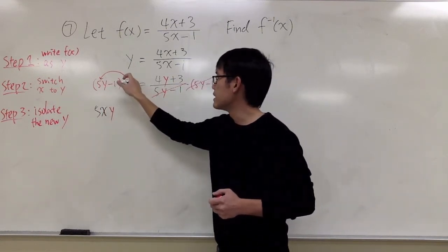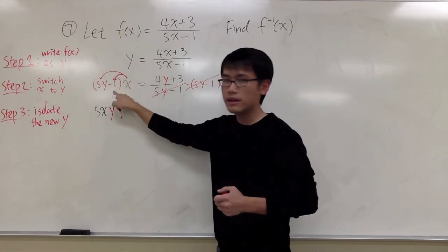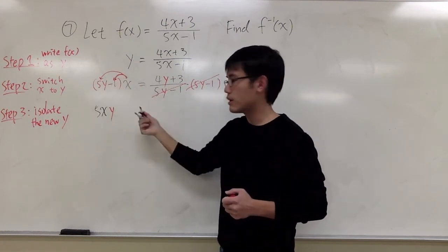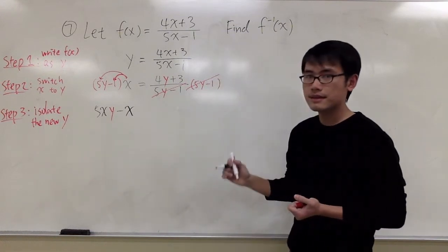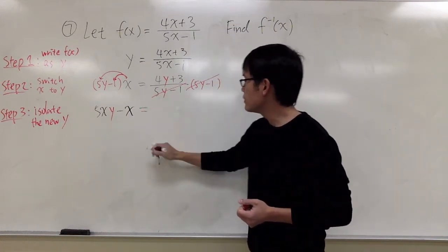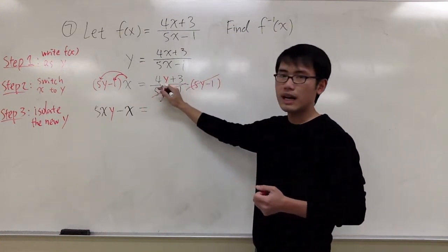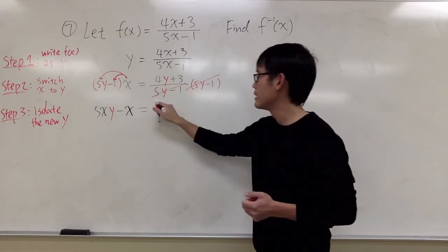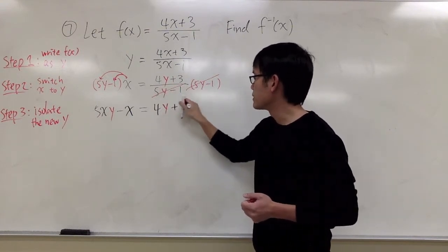And we also take the x, multiply with the negative 1. So x times negative 1, we will have minus x. Equals to this side right here, we only have 4y plus 3. Equals to 4y plus 3.